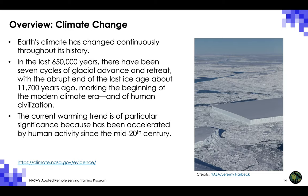During the last glacial maximum, much of the world was cold, dry, and inhospitable, with frequent storms and a dust-laden atmosphere. Dust levels were as much as 20 to 25 times greater than today. The massive sheets of ice locked away water, lowering sea level roughly 125 meters, or about 410 feet, lower than it is today, exposing continental shelves, joining land masses together, and creating extensive coastal plains. The current warming trend is of particular significance because it has been accelerated by human activity since the mid-20th century.